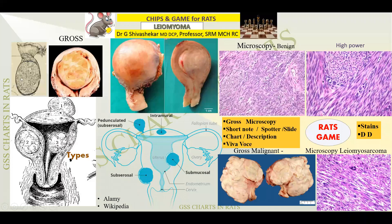So in this class we have seen the uterus with leiomyomata, which can be solitary or multiple, in various locations. In both the benign specimens I find it is well circumscribed and whorled, whereas in leiomyosarcoma it is irregular, fleshy, and pleomorphic. Microscopically it is more or less regular in leiomyoma, whereas I am able to see mitotic figures and hyperchromasia in leiomyosarcoma.